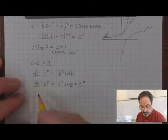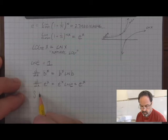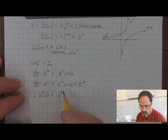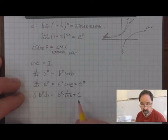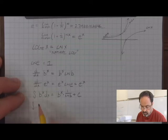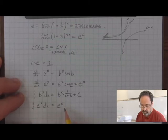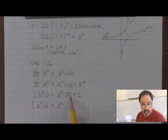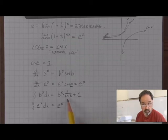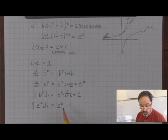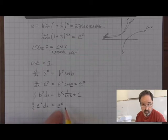The integral of any exponential function b to the x is equal to itself times 1 over the natural log of the base. So the integral of e to the x is itself times 1 over the natural log of e, which is 1 over 1, or just 1, so we don't need to include it if we're multiplying by 1. The integral of e to the x is itself, just like the derivative, but don't forget c.